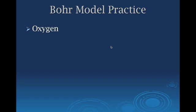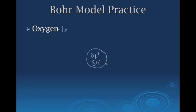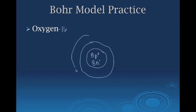The first element I want us to draw a Bohr model for is oxygen. First, draw the nucleus. According to the periodic table, oxygen has eight protons. We'll use the most common form, oxygen-16, so it has eight protons and eight neutrons. The next step is to draw the correct number of energy levels. Oxygen is in row two, so we draw two energy levels.